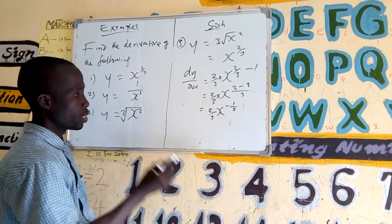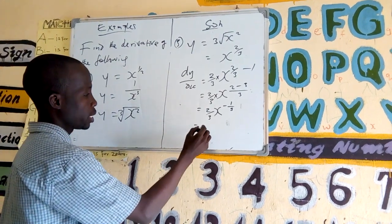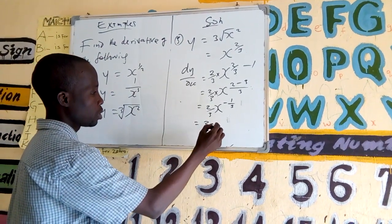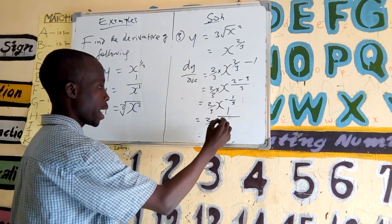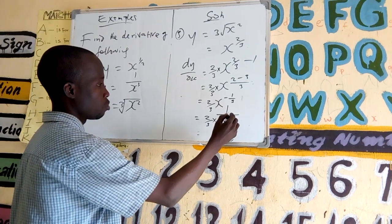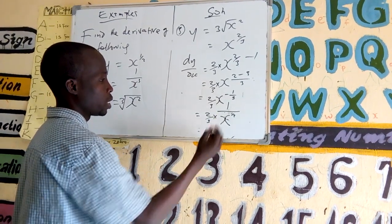x to the minus 1 over 3 is equal to 2 over 3 times 1 over x to the power of 1 over 3.